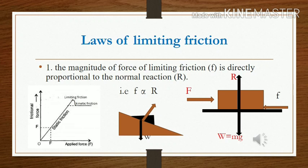To understand normal reaction, consider this example: a block placed on a horizontal surface. The weight of the block acts downwards, represented as W = mg. The surface exerts an upward force on the block, represented by R. This upward force that the surface exerts on the block is known as the normal reaction. In this horizontal case, the normal reaction and the weight act along the same line of action.